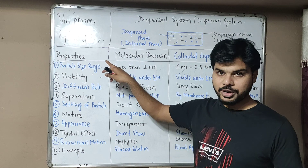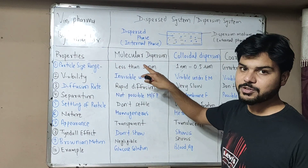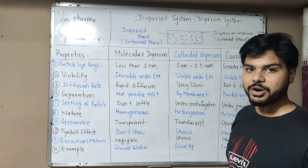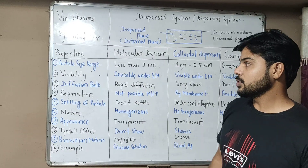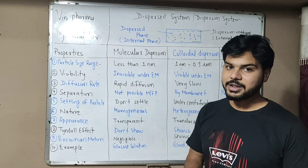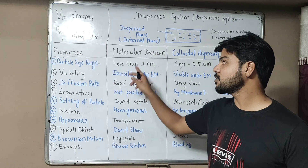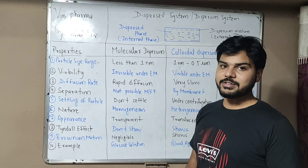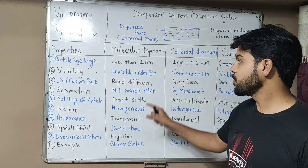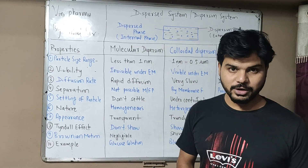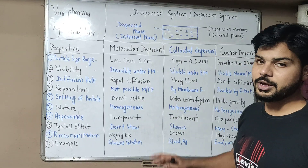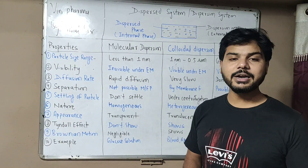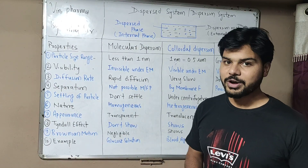We have three categories of dispersed systems: molecular dispersion, colloidal dispersion, and coarse dispersion. For particle size range: molecular dispersion, which we also call true dispersion, has a particle size of less than 1 nanometer. Colloidal dispersion ranges from 1 nanometer to 0.5 micrometer. Coarse dispersion has a particle size greater than 0.5 micrometer.